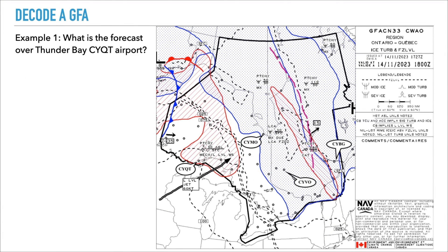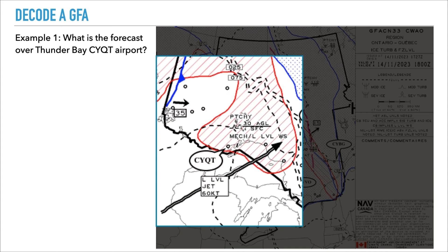Let's look at a real example. What is the forecast over Thunder Bay Airport? Looking at the weather, there's a low-level jet moving northeast bound at 60 knots, and that's producing moderate mechanical low-level wind shear from the surface to 3,000 feet above ground level. The clouds in the area are patchy.